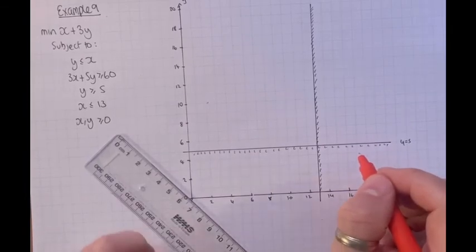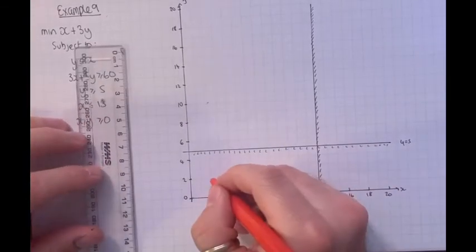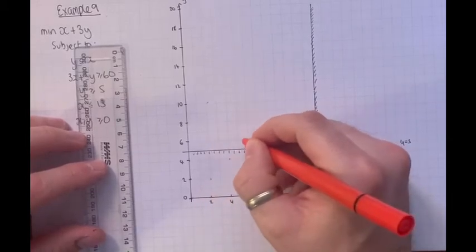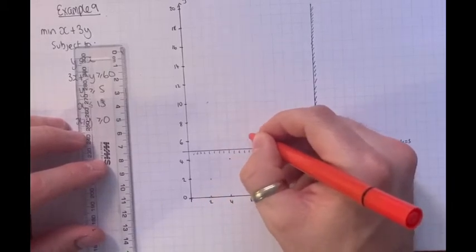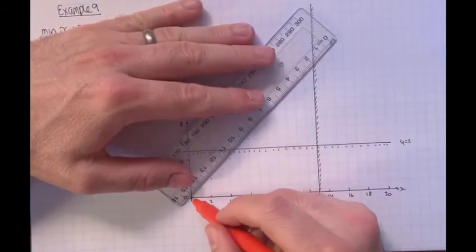X is less than 13, so draw X equals 13 as a vertical line, showing the excluded region to the right. Y is less than X: when X is 2, Y is 2; when X is 4, Y is 4; when X is 6, Y is 6 — just a diagonal line.